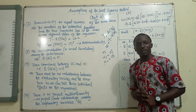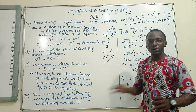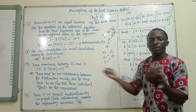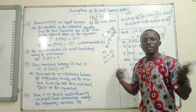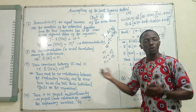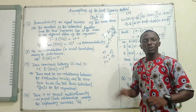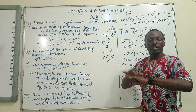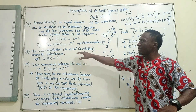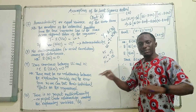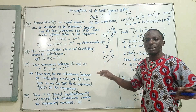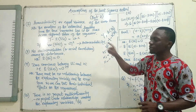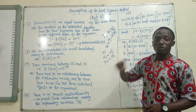Moving to the next assumption: no autocorrelation. Autocorrelation simply implies a relationship between or among the error terms — that is, the disturbances. There must be no autocorrelation, no relationship among them. It is also called serial correlation, so no serial correlation must exist among the disturbances in question.